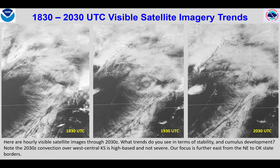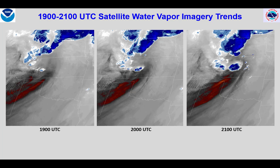Visible satellite imagery through 2030Z indicates very stable conditions over northeastern and far eastern Kansas given the cloud streets, with full heating further west across east central Kansas suggesting considerable air mass destabilization. Water vapor imagery through 21Z shows a significant upper trough rotating northeastward over Kansas with a dry slot and upper wind maximum approaching south central Kansas.